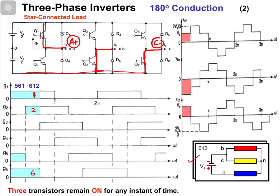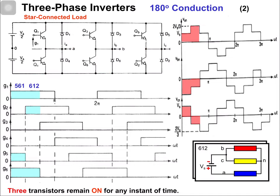From the equivalent circuit we can determine the voltages. Phase A voltage van = (2/3)Vs, and phase B and phase C voltages are both equal to -(1/3)Vs because both are connected at one point. This is the voltage waveform for the second switching interval.